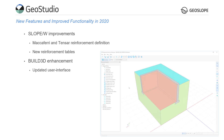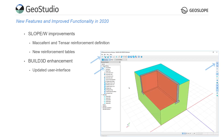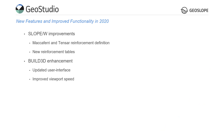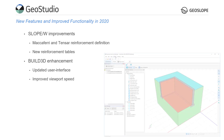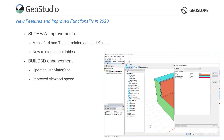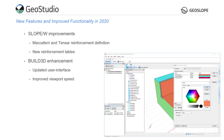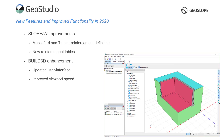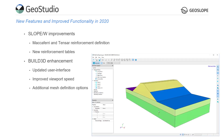Enhancements to Build3D include improved tool dialogs, toolbars, and icons in the Build3D user interface. The 3D viewport was also upgraded such that materials and boundary conditions update when modified in the main GeoStudio window, and to allow for faster switching between analyses. Finally, the 3D mesh definition was expanded to allow for constraints on points.